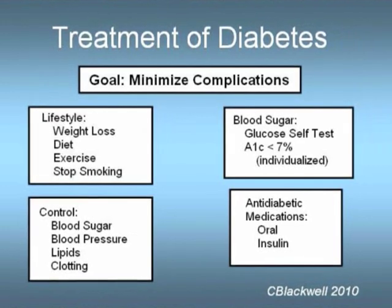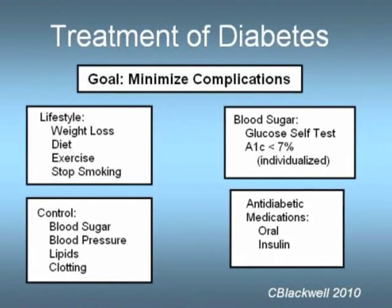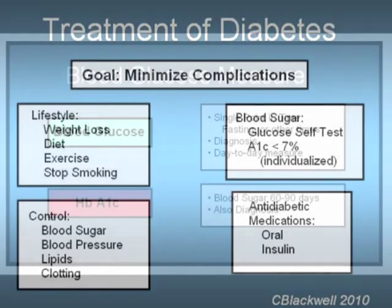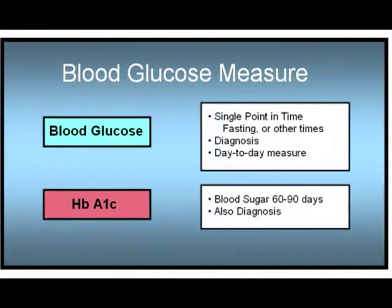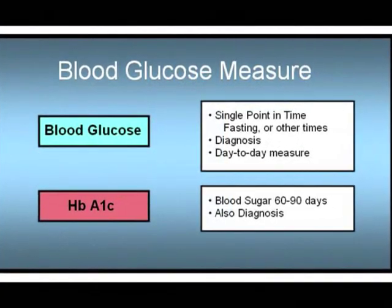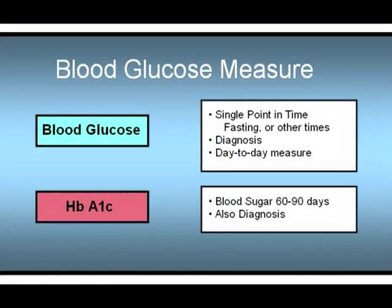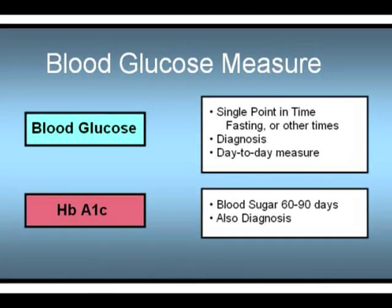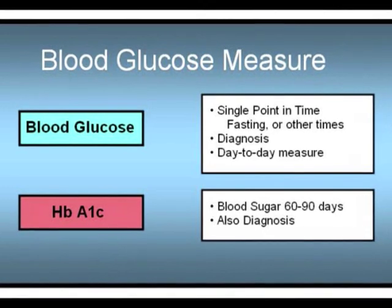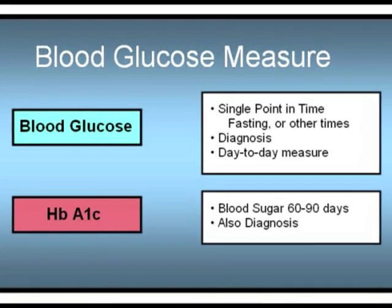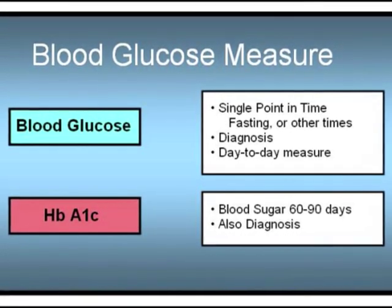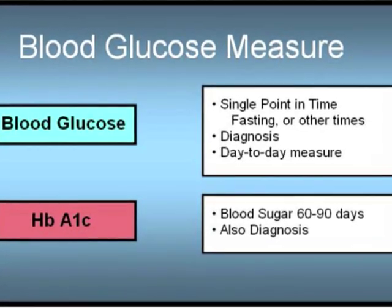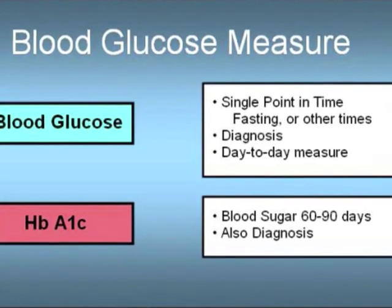The usual target is an A1c of 7 or less — base this on your doctor's advice. In monitoring your own glucose, finger stick and glucose meter are the usual tools done on a daily basis. A1c provides a measure for a 2- or 3-month period of time. It turns out the A1c value has a very good correlation with complication rates, making it the most useful tool for long-term follow-up.